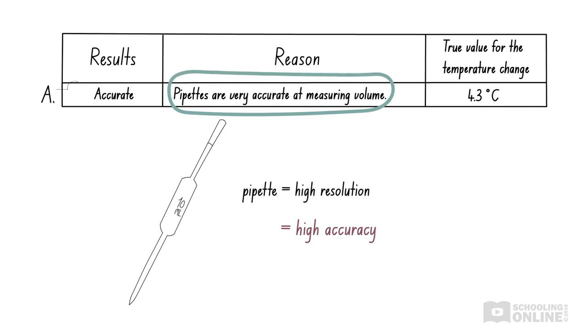However, we cannot be certain that the results of this experiment are accurate based off this one small aspect. Since this experiment also involves heat, we will have to consider whether the temperature was accurately measured. So, let's look at the other options and come back to this later.